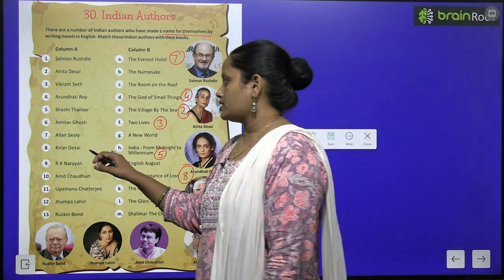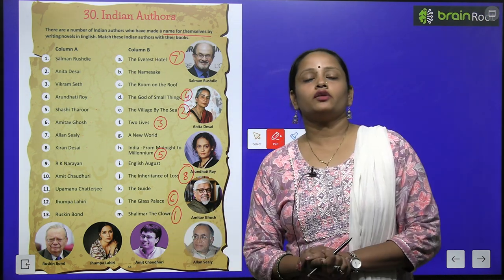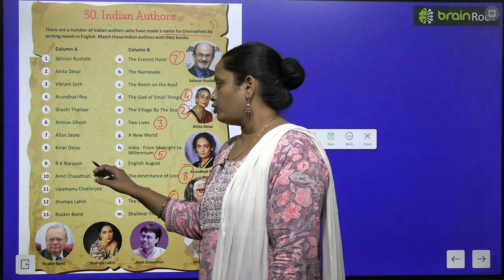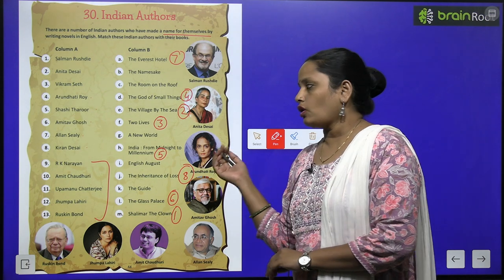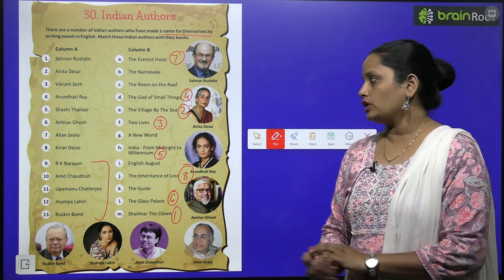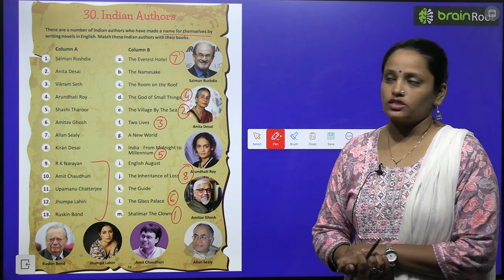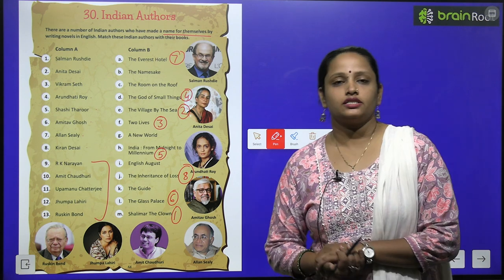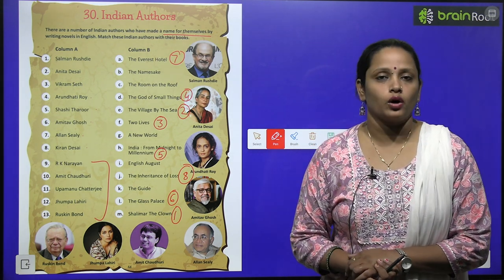Kiran Desai wrote The Inheritance of Loss. So children, what you have to do now — from question 9 to 13, you have to find out what books these different people wrote. In logo ne kaansi books yahan pe jo mention hai unse likhi hai, and you have to match the authors with the name of their books.